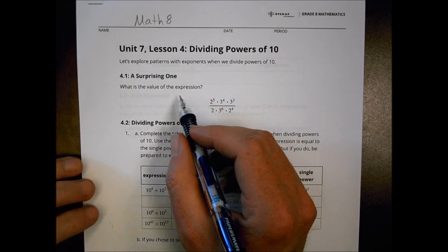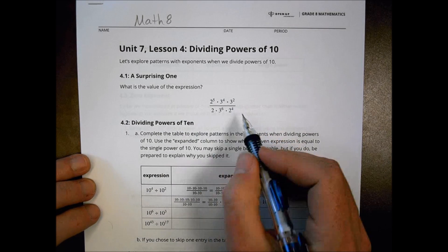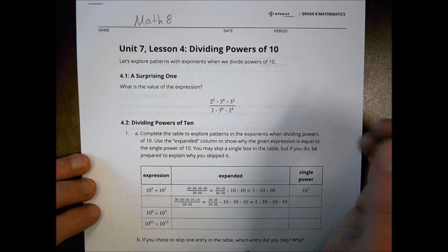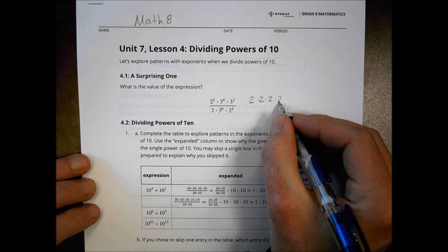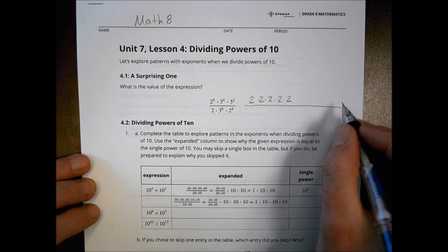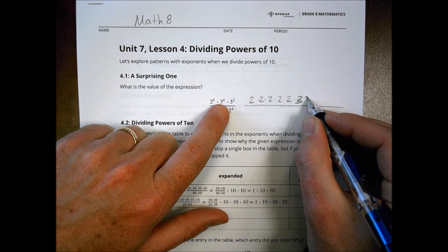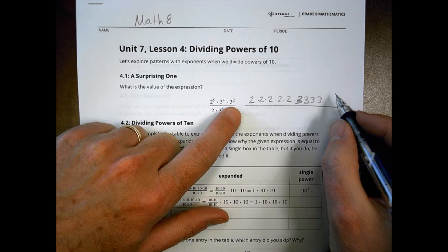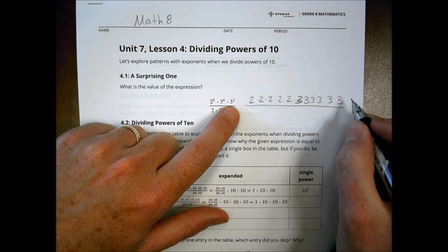So first of all, we have, what is the value of the expression right here? So if we were to take this and break this apart, we would have a lot of twos up top. We'd have five twos, one, two, three, four, and five. We'd also have four threes. So one, two, three, four. And we'd have two more threes, one and two.